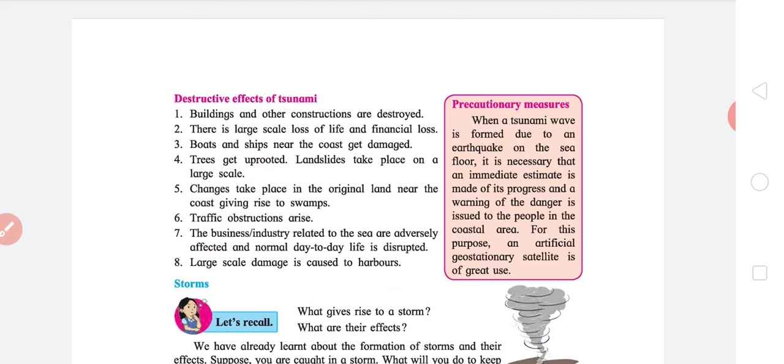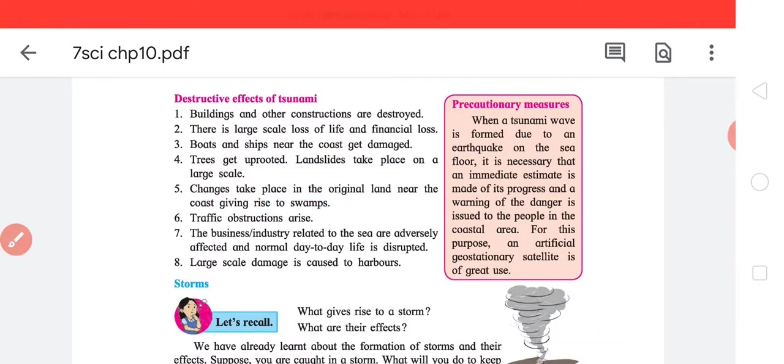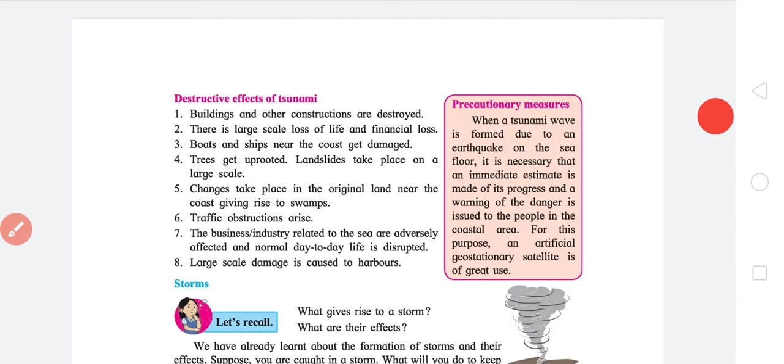Everything can be explained if you take the destructive power of water into account. Once you see the video of what is an actual tsunami, it is actually very powerful. Trees get uprooted, landslides take place on a large scale because when trees get uprooted there is nothing to hold the soil and landslides take place. Fifth, changes take place in the original land near the coast giving rise to swamps. When this ton of salt water comes on land, this negatively impacts all the water sources. Basically they start to become a bit salty like salt water. This is what is swamp.